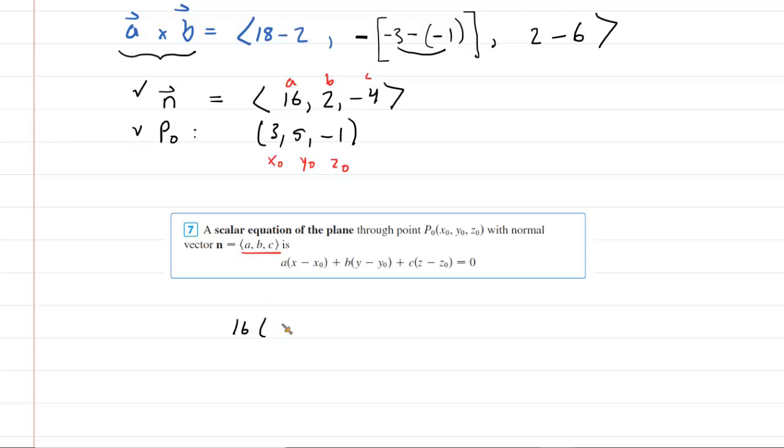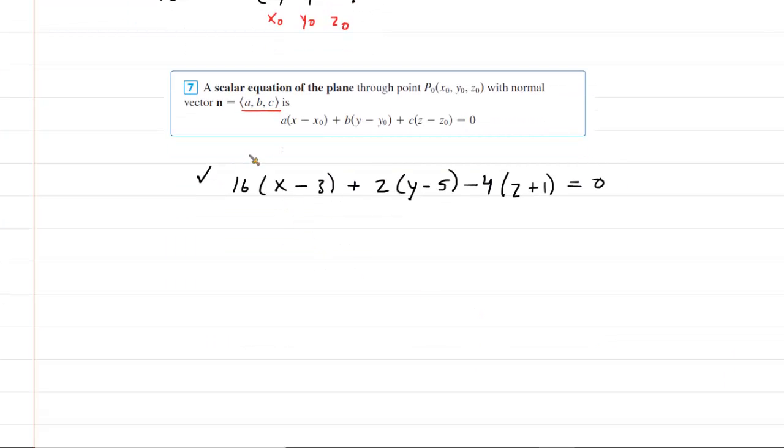We're going to have our little a of 16 times x minus our x naught plus our little b times y minus our y naught. And then plus little c, that's going to be a minus four, be careful there, times z minus negative one. So that'll become plus one equals zero. And that's perfectly fine. Your professor might accept that as a final answer. But we can do a little bit better by distributing all of these direction numbers here. So we're going to have 16x minus 48 plus 2y minus 10 minus 4z minus 4 equals zero. Now we can combine all the constants. So here, here, and here. So negative 48 minus 10 minus 4 is negative 62.